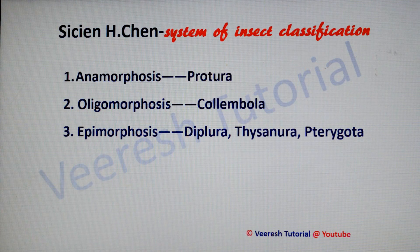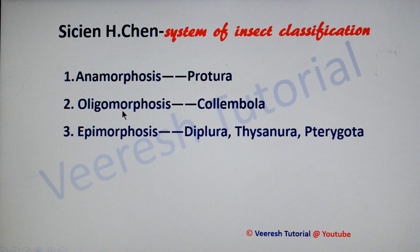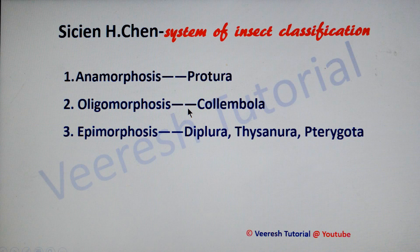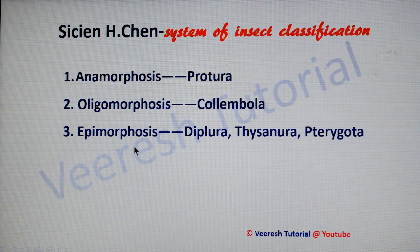CN Chen proposed a system of insect classification based on metamorphosis with three main types. First is anamorphosis — addition of abdominal segments, present in Protura. Second is oligomorphosis, seen in Collembola, where at least three important larval features are evidently retained in the adult stage: six abdominal segments, four to six segmented antennae, and larval character in the structure of the gonads. Third is epimorphosis, where body segments do not increase or decrease during development, seen in Diplura, Thysanura, and pterygote insects.